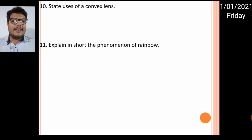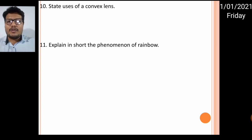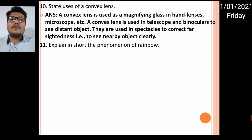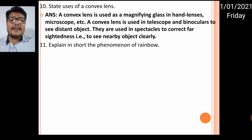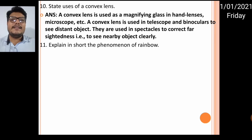State the uses of a convex lens. Convex lenses are used as magnifying glasses — a magnifying glass itself is a convex lens. They are used in binoculars, microscopes, and telescopes to see distant objects. They are also used in spectacles for farsightedness, for people who are not able to see nearby objects.